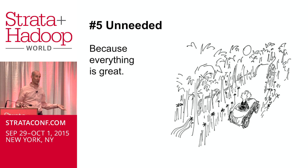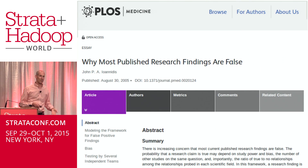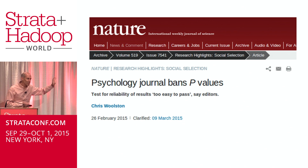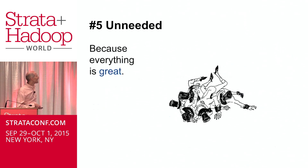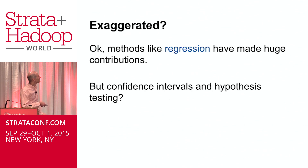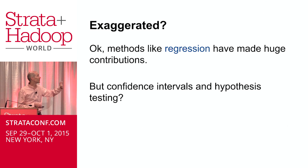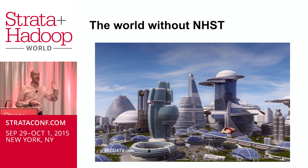We don't need Bayesian methods because everything is great — well, not so much. We have reason to believe that many published findings are wrong. Some journals are explicitly banning classical statistics. I think this is actually a big mess we're dealing with. I don't want to throw out the baby with the bathwater — there are classical methods like regression that are enormously powerful tools. But specifically, the tools of statistical inference — confidence intervals and hypothesis testing — I believe the world would be a better place if null hypothesis significance tests had never existed.